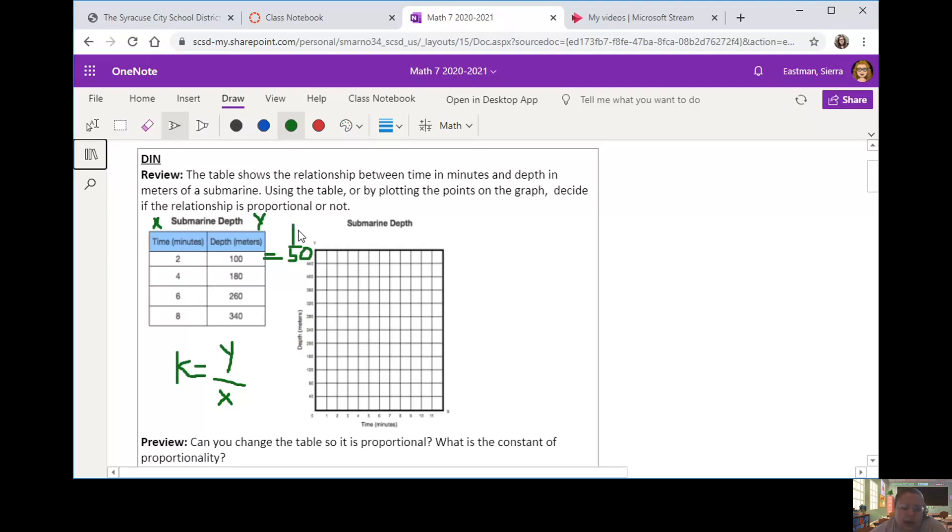This is my K column here. 180 divided by 4. Is that going to be the same or different? 180 divided by 4, that actually gives me a 45. So right away, guys, we see that this is not proportional, because automatically we already have one that's not equal. But I'm going to do the rest anyway. Let's see what happens. 260 divided by 6, that's actually 43.3333.